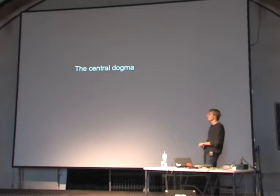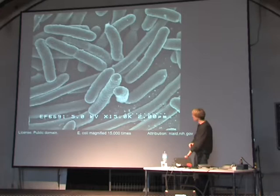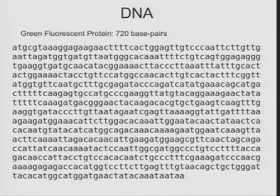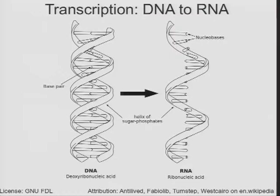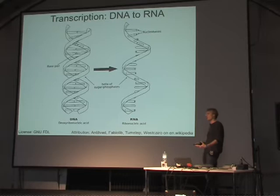I'll give a quick overview of the central dogma of biology — once we understood this, we basically understood the principle of how all biology works. You have cells — this is E. coli magnified 15,000 times, scale bar of two micrometers. Inside these cells there's DNA. Green fluorescent protein is a nice protein that lights up green under a black light, and this is the DNA code for it: 720 base pairs or nucleotides. The DNA inside the cell is transcribed — turned into RNA when it needs to be used. The DNA is the archive copy the cell keeps, while RNA is the working copy.